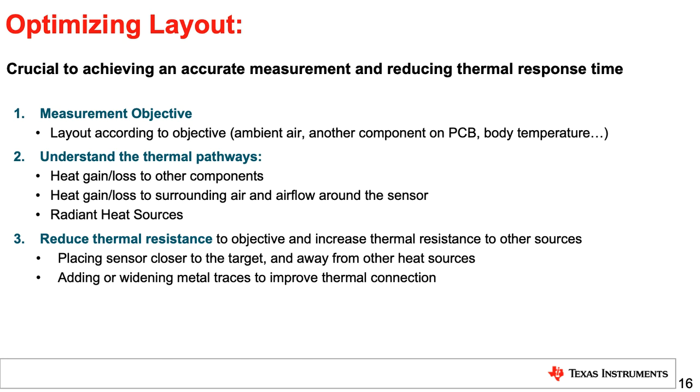Third is to manage the thermal resistance. The goal here is to minimize the thermal resistance between the sensor and the target object, while trying to maximize the resistance to other heat sources that could negatively impact the accuracy of the measurement. This is where a lot of tricks can be employed in not only where the sensor is placed, but adding or removing metal depending on the objective.